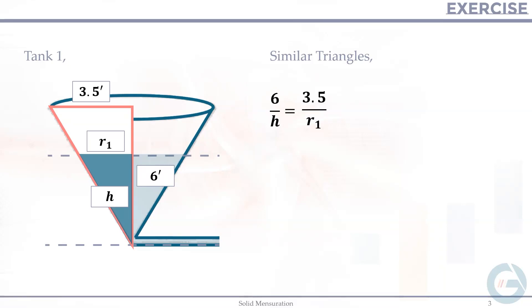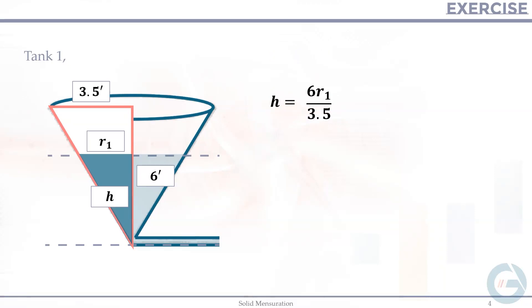Cross multiplying gives 6R₁ = 3.5H. Solving for H by dividing both sides by 3.5: H = 6R₁/3.5, which simplifies to H = (12/7)R₁. Take note of this first equation.